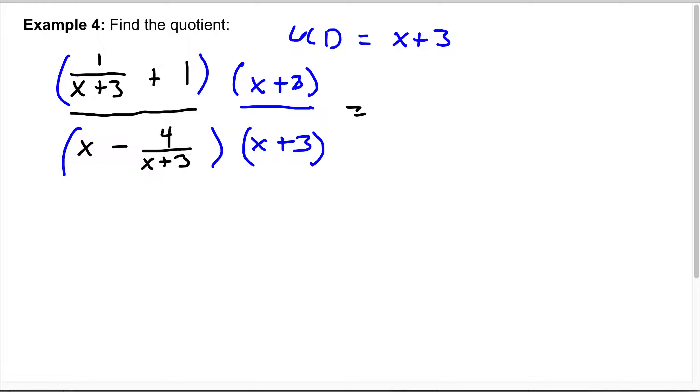Okay, so when you distribute, I'm going to say this times this, this times 1, this times x, this times this. Okay, so the first one, the x plus 3 is going to cancel. You're going to be left with 1 plus x plus 3. The denominator, you're going to get x squared plus 3x minus 4. Okay.